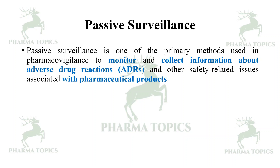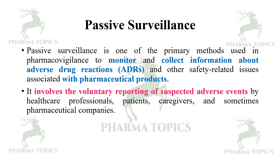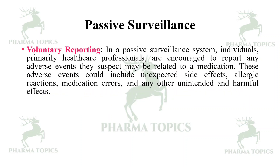Passive surveillance is one of the primary methods used in pharmacovigilance to monitor and collect information about the ADRs and other safety-related issues associated with pharmaceutical products. It involves the voluntary reporting of suspected adverse events by healthcare professionals, patients, caregivers, and sometimes pharmaceutical companies.